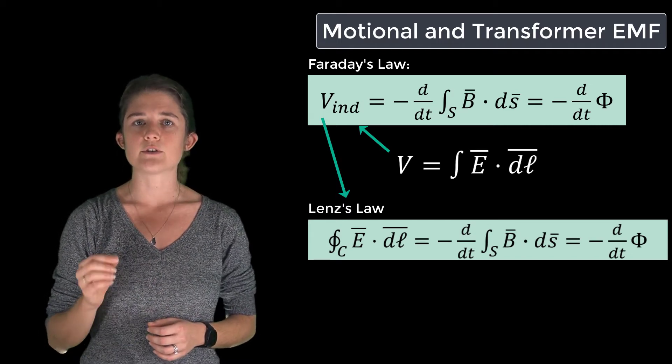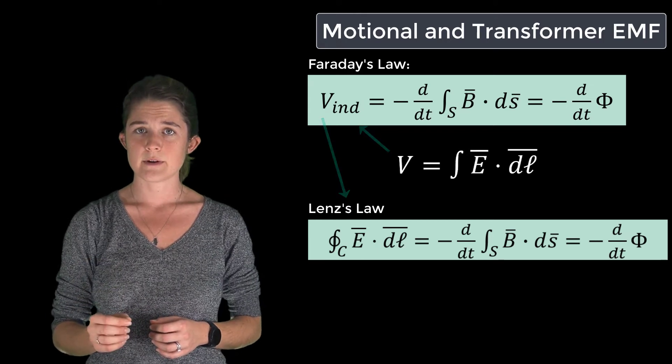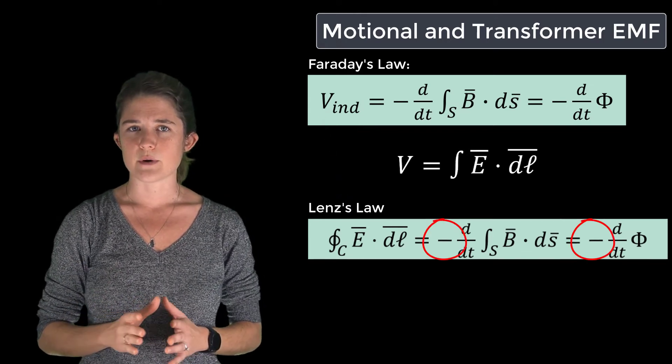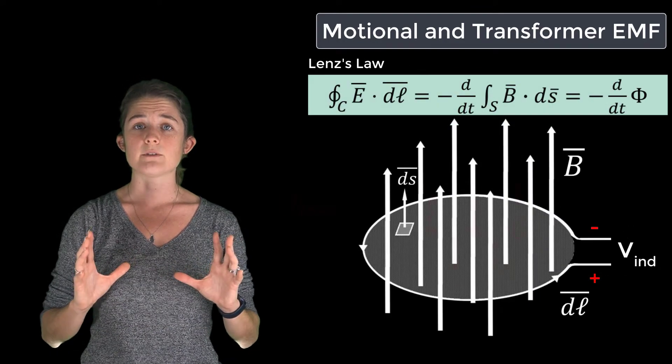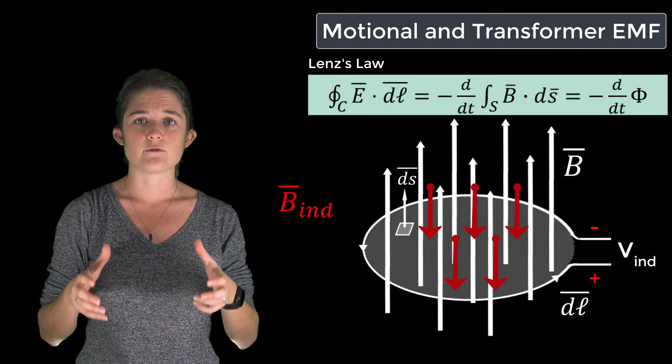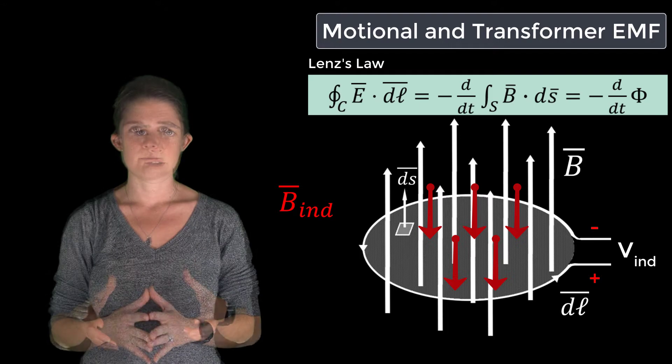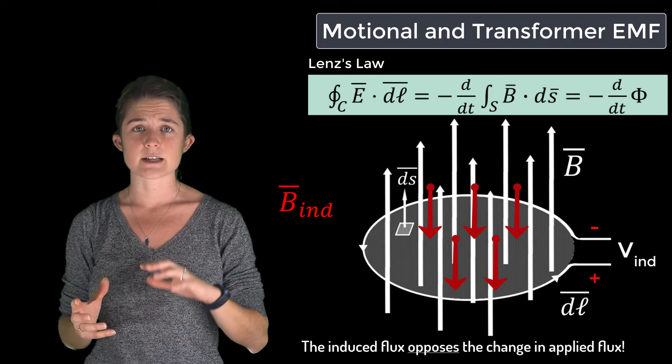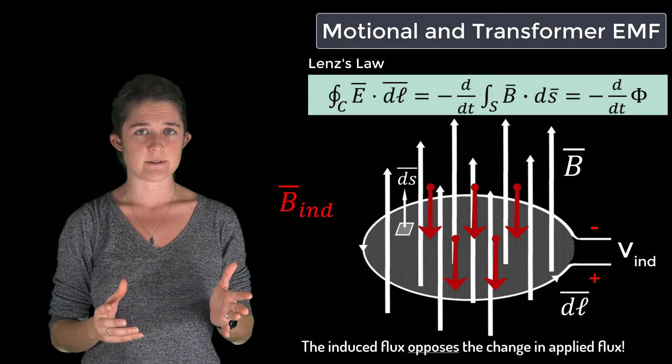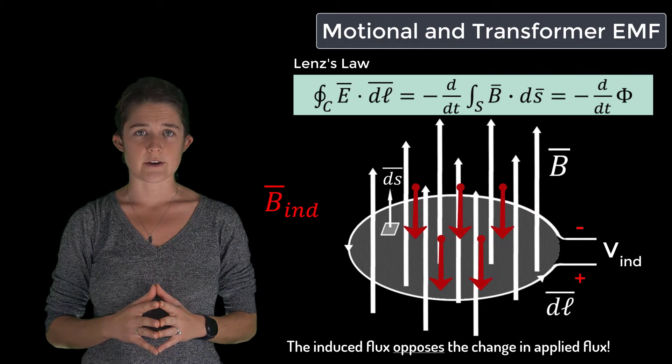the negative time derivative of the total flux through that loop. Note that the negative sign in this equation means that the induced voltage will create a magnetic flux that is in the opposite direction from the change in applied flux. In other words, the induced flux opposes the change in applied flux. This effect is known as Lenz's law.